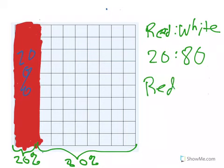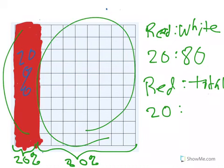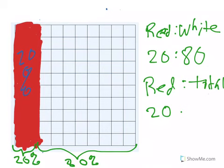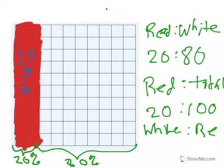If we wanted to do red to the total blocks, we know there's 20 filled in, but we know the total, which is all the white blocks and all the red blocks would be 100, 20 to 100. If we wanted to say the white unfilled in portion to the red, we'd be looking at 80 to 20. And if we wanted to do white to the total, it would be 80 to 100.